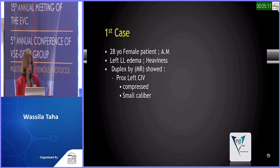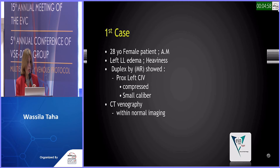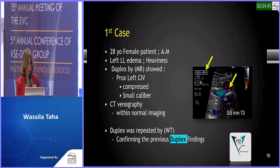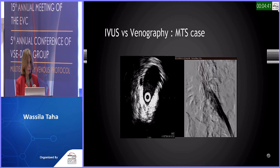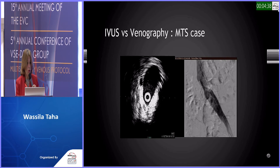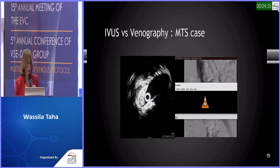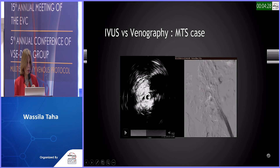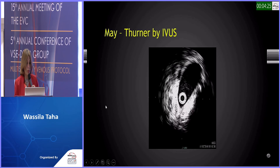The first case was a 28-year-old female with left lower limb heaviness. Duplex performed by a senior registrar showed proximal left common iliac vein compression with small caliber. CT venography failed to depict this focal stenotic lesion. A senior consultant confirmed the duplex finding of a stenotic lesion. We recommended IVUS. Here is the venography of this patient, and the IVUS video shows that when the right common iliac artery traverses and crosses the vein, it is clearly stenotic.